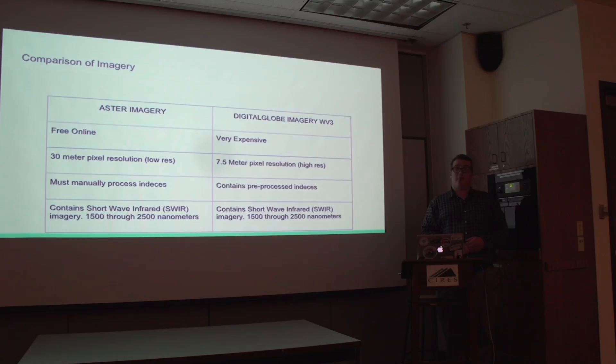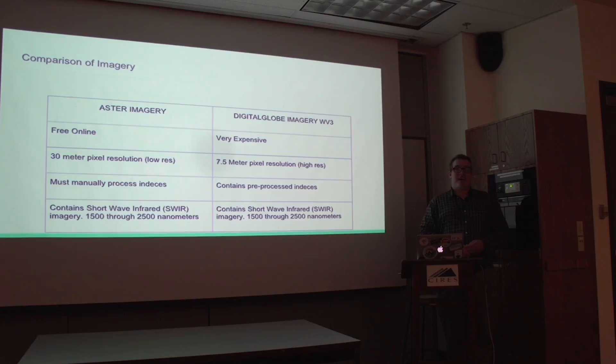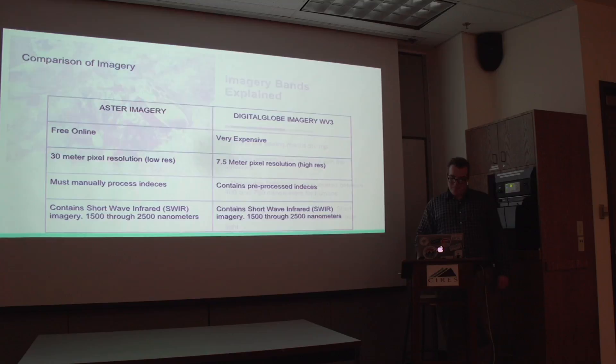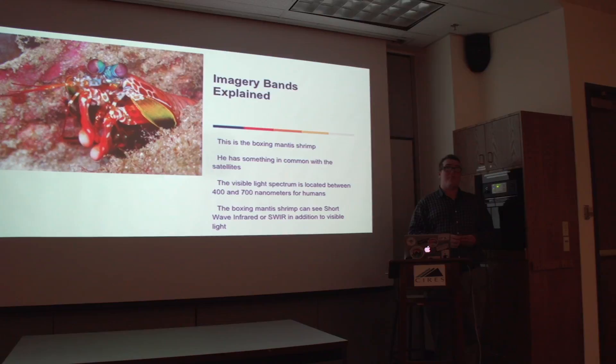Both ASTER and Digital Globe share a common factor for my project: they both contain shortwave infrared imagery, approximately 1500 to 2500 nanometers. Now I'd like to introduce my friend here — this is the boxing mantis shrimp.